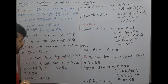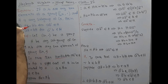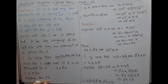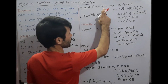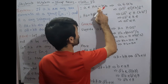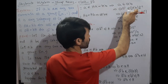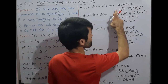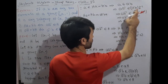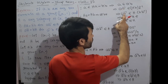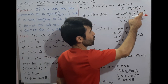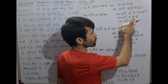Since a belongs to Ha and Ha = Hb, this implies a belongs to Hb. Since a belongs to Hb, multiplying both sides by b⁻¹, we get a·b⁻¹ belongs to H·b·b⁻¹, by the associative axiom.